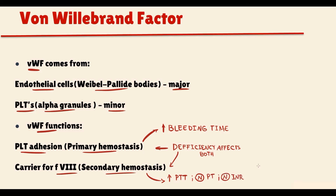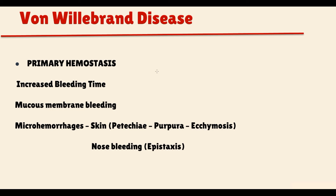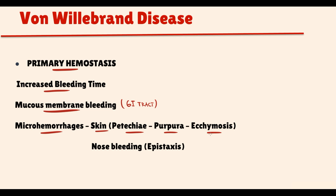Because the major function of von Willebrand factor is to provide adhesion, von Willebrand factor deficiency mostly disrupts primary hemostasis. Disruption of primary hemostasis manifests with increased bleeding time, mucous membrane bleeding primarily from the GI tract, microhemorrhages that on the skin manifest with petechiae, purpura, and ecchymosis, and also frequent nosebleeds — so-called epistaxis.